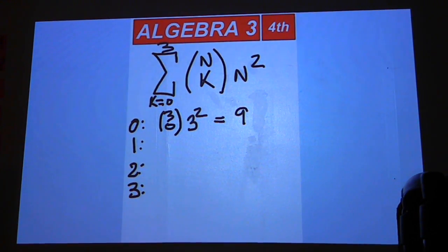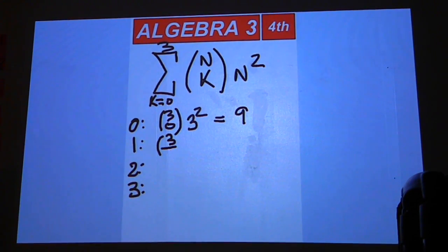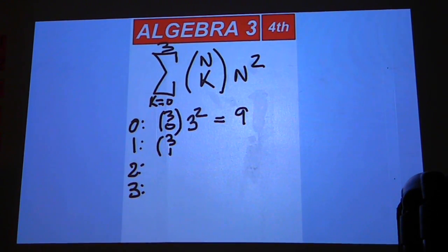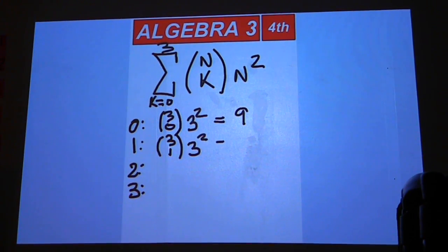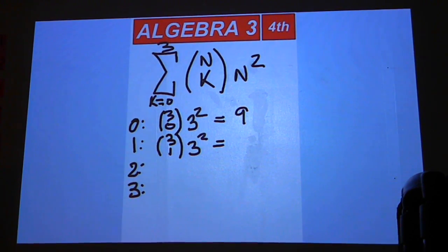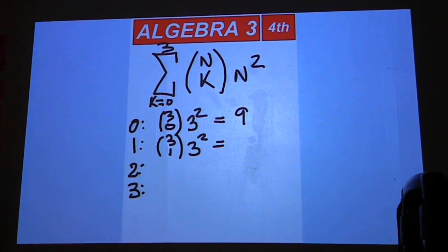Then we'll go to the one. We're going to have three and then choose one. Three choose one. And then n is still going to be three squared, that's nine. So with three, you have three different ways to choose one out of three. So that's three times nine is 27.